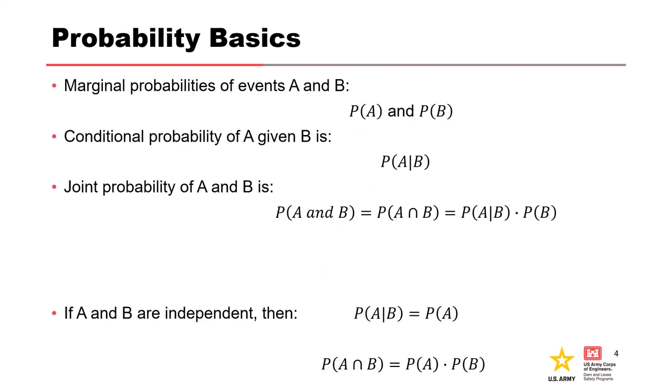So back to some of the basics — maybe you remember these, maybe you have to relearn them. These are some of the basic probabilities that go into our likelihood function. We've got marginal probability: the marginal probability of an event A is simply the probability of A, and the same for B. Pretty straightforward.